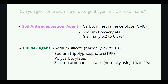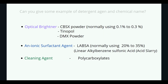Builder agents: sodium silicate, normally 2% to 10%; sodium tripolyphosphate (STPP); polycarboxylate; zeolite; carbonate silicate, normally used 1% to 2%. Optical brighteners: CBSX powder, normally used 0.1% to 0.3%; Tinopal; DMX powder. Anionic surfactant agent: LABS, LAPSA, normally used 20% to 35%; linear alkyl benzene sulfonic acid (acid slurry) — cleaning agent; polycarboxylate for breaking down stains.